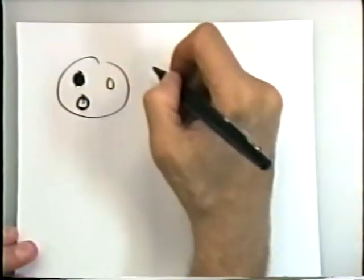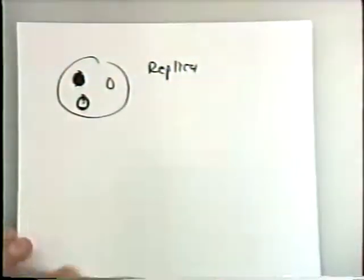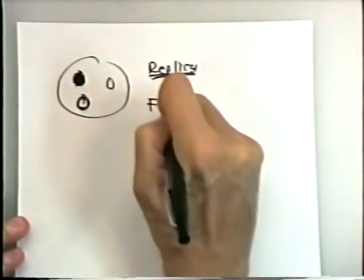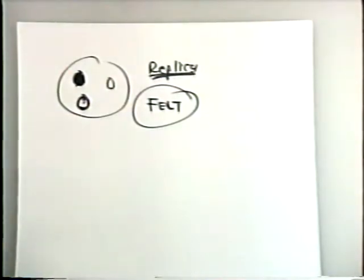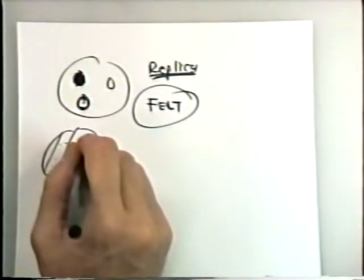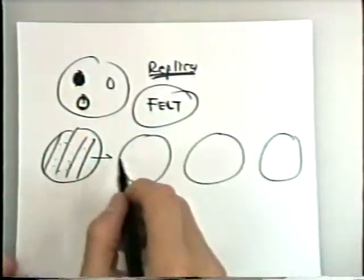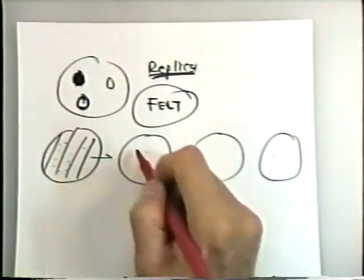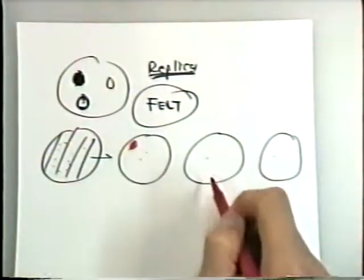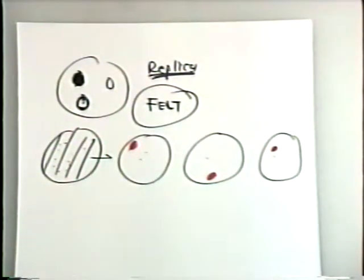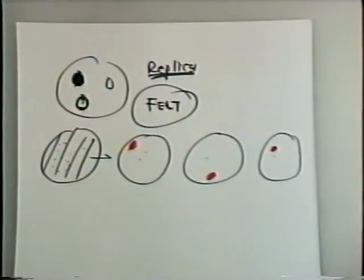Luria did this by a technique called replica plating. What he did was he took felt — today he probably would have taken Velcro — and he could take a dish of cells, place the felt on it. The felt would pick up cells from this dish, and he could then push the felt down on a number of other dishes and create the same set of colonies in the same location in each dish. He showed that when you ran the experiments on these dishes, sometimes the mutants found at the end started in one location, sometimes another, and sometimes elsewhere — so different cells in the dish were always mutating. This replica technique gave further credence to the result.